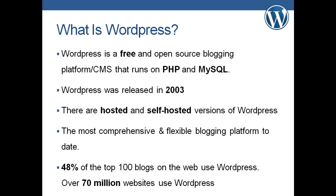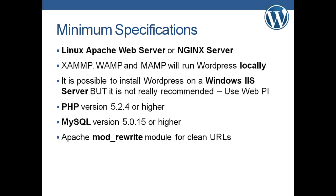WordPress is the most comprehensive and flexible blogging platform to date. It's used in 48 percent of the top 100 blogs in the world, and there are over 70 million websites that use WordPress. These may or may not be blogging sites — they may just use the CMS — but 70 million WordPress sites out there is pretty impressive.